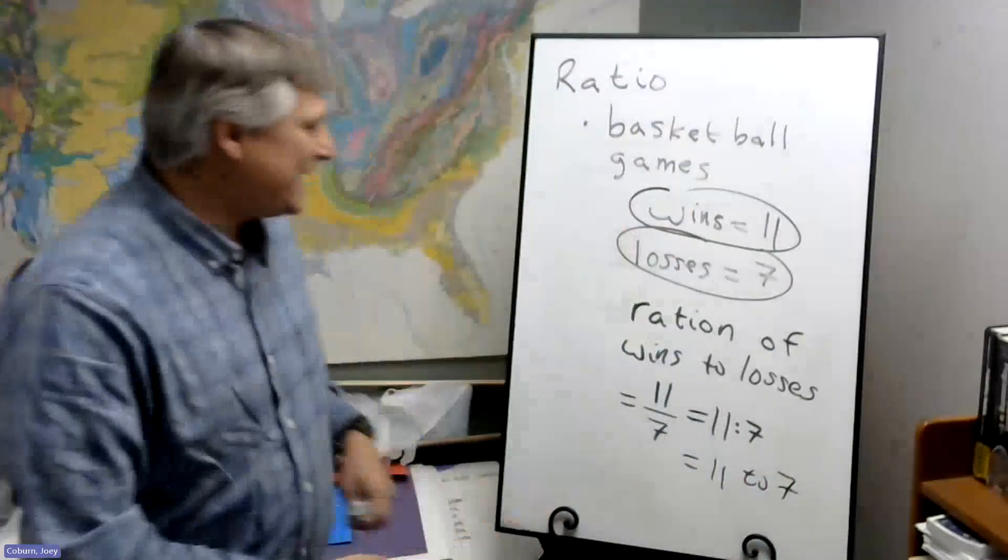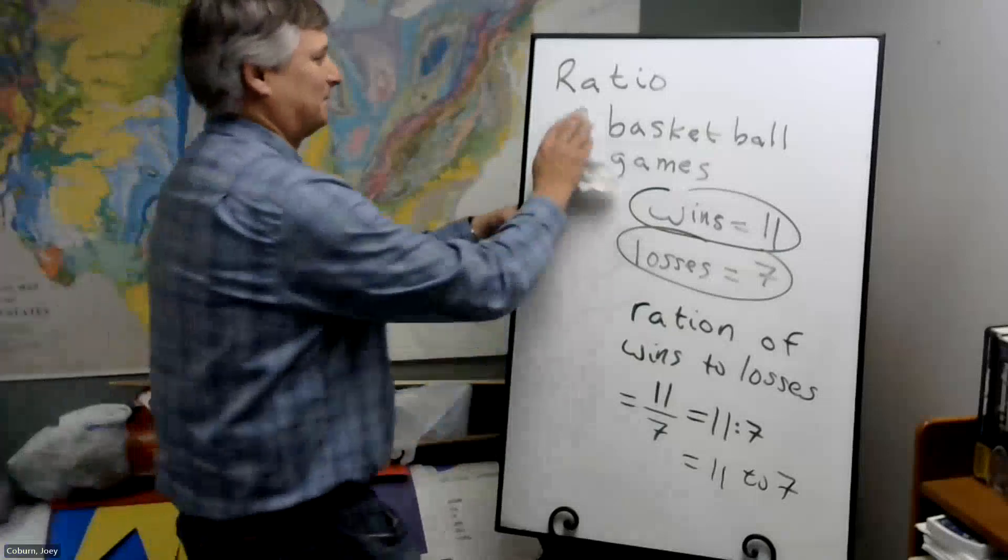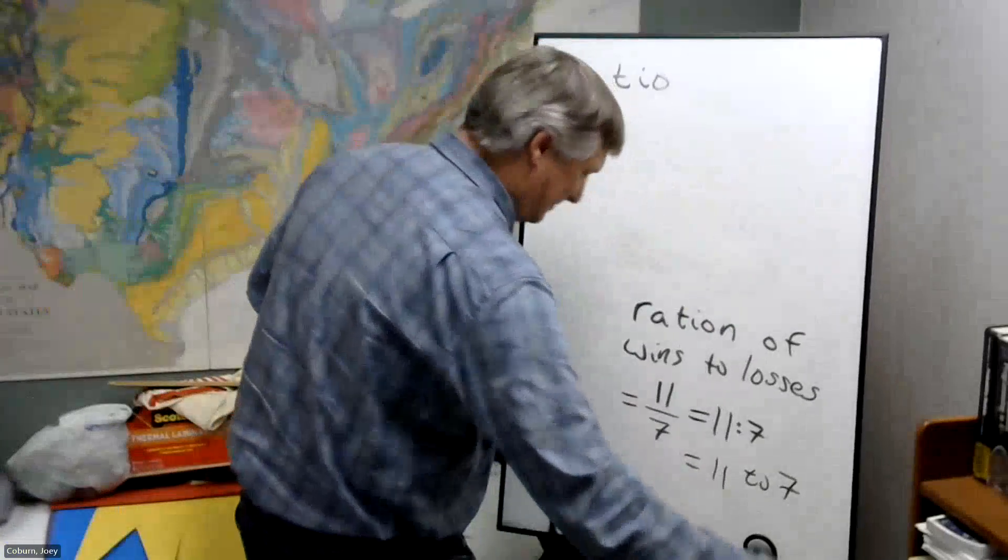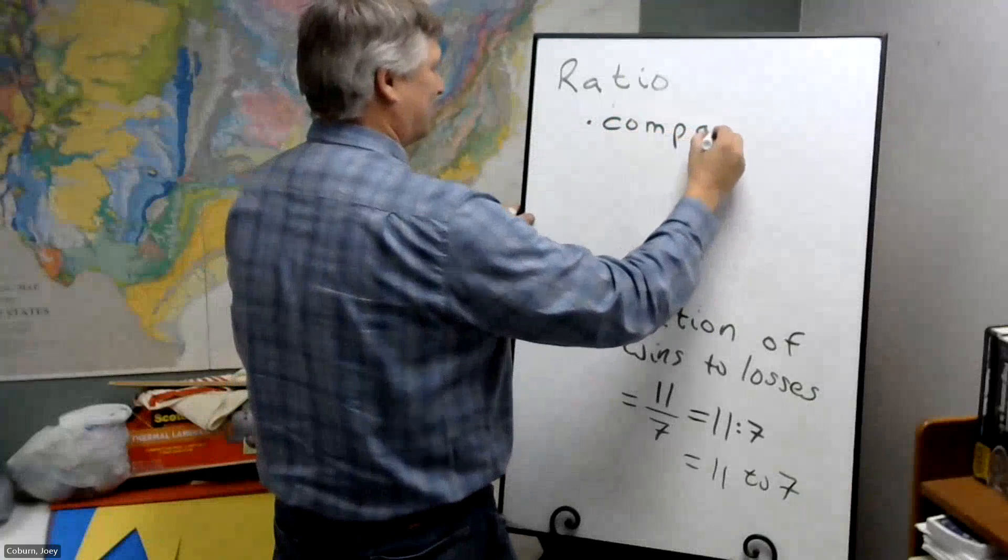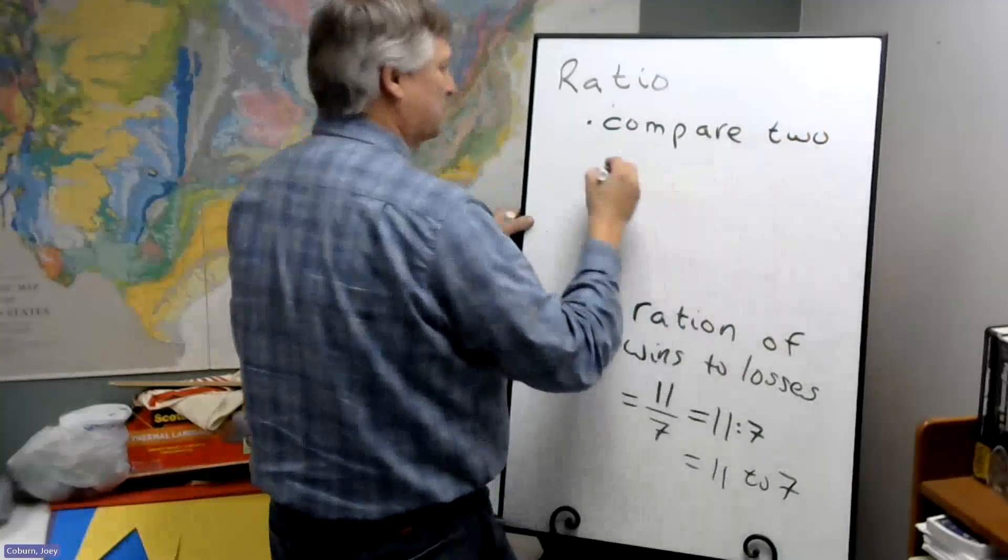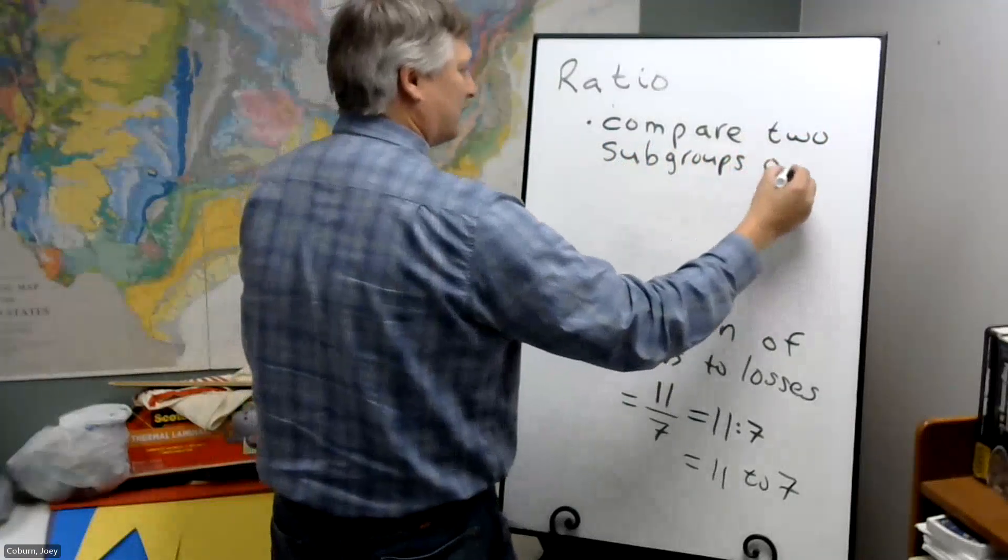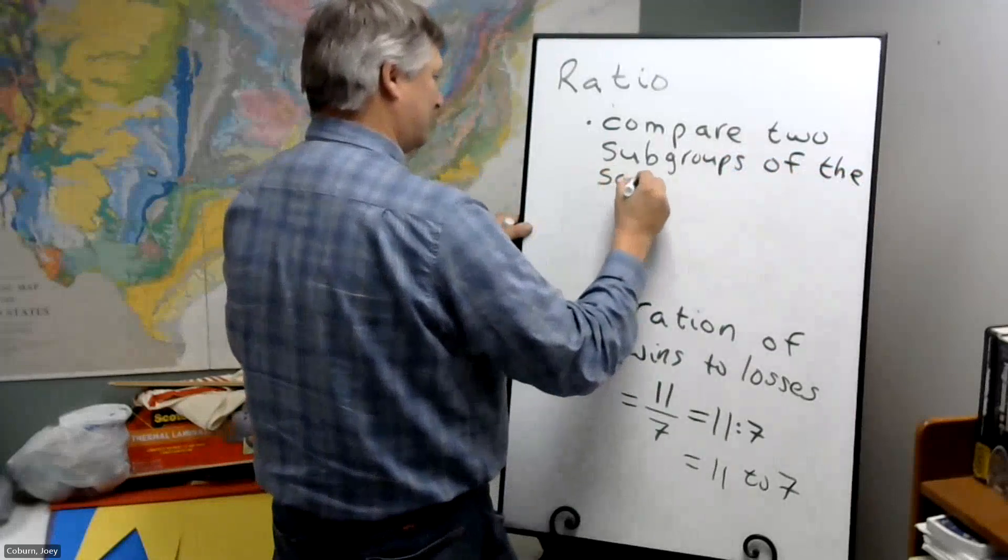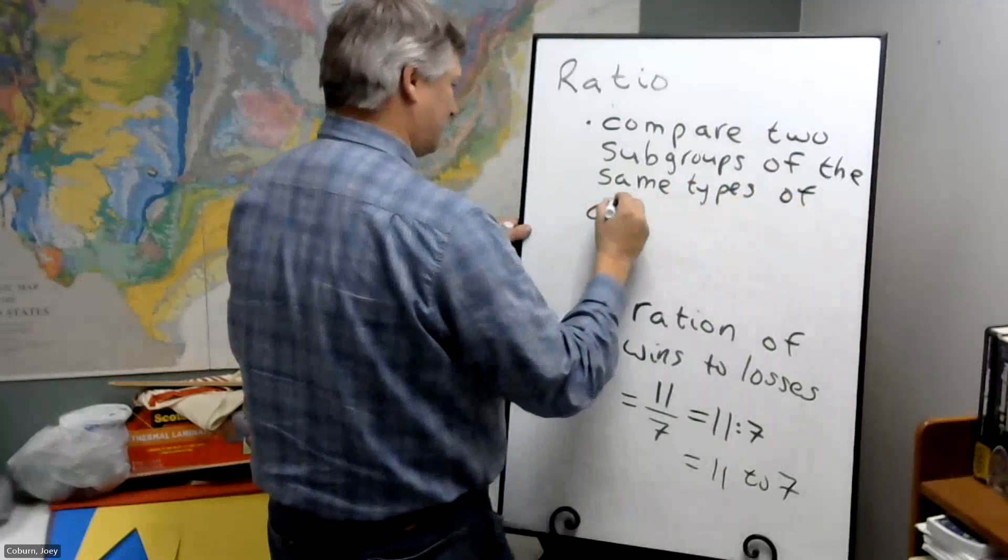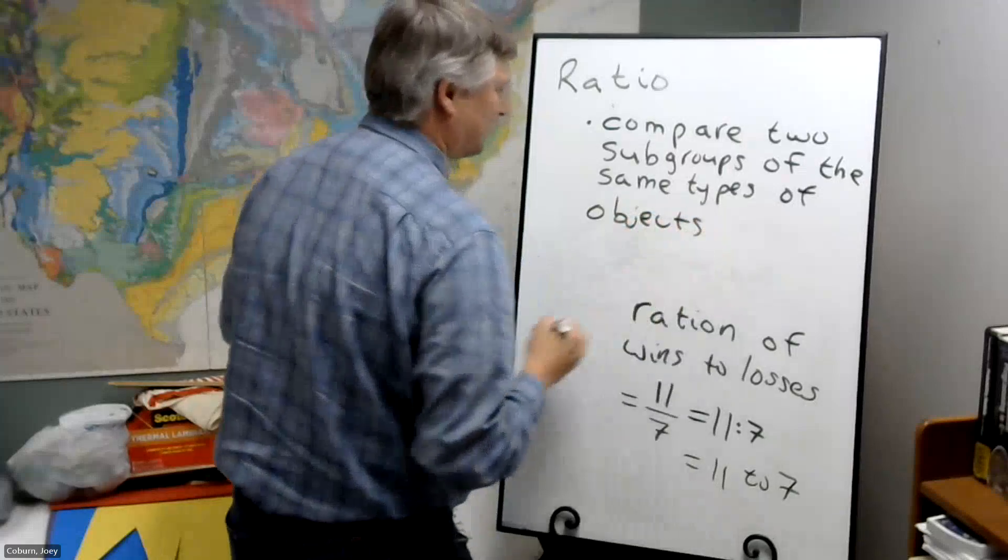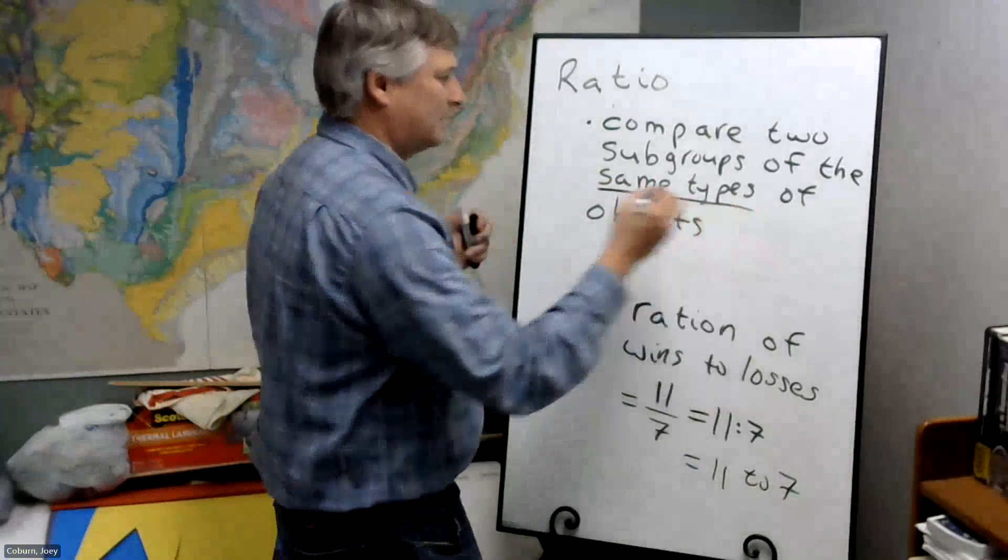So in essence, we're comparing two subcategories of the same type of objects, or two groups or subgroups. We're going to compare two subgroups of the same types of objects.